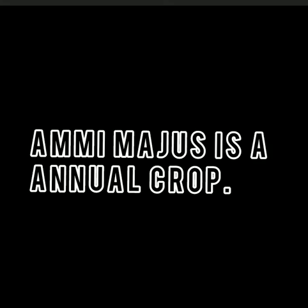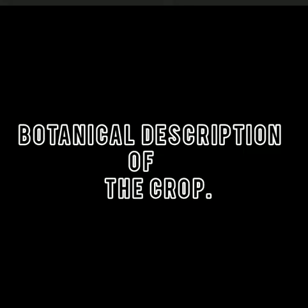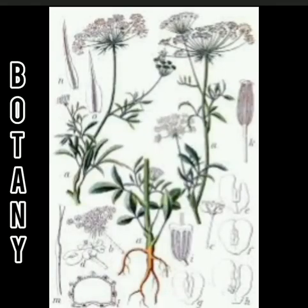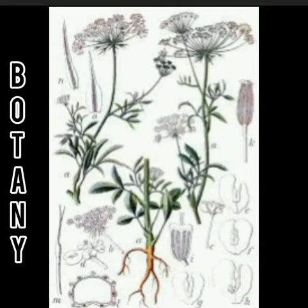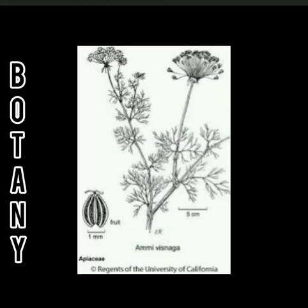Ammi majus is actually an annual, but if grown in a very cool climate or at high altitude, it behaves as a biennial. Regarding botanical description and floral biology: it is an annual umbelliferous herb. The inflorescence is an umbel, as reflected in the family name itself. It may grow over a meter in height, depending on soil, climate, and other factors.